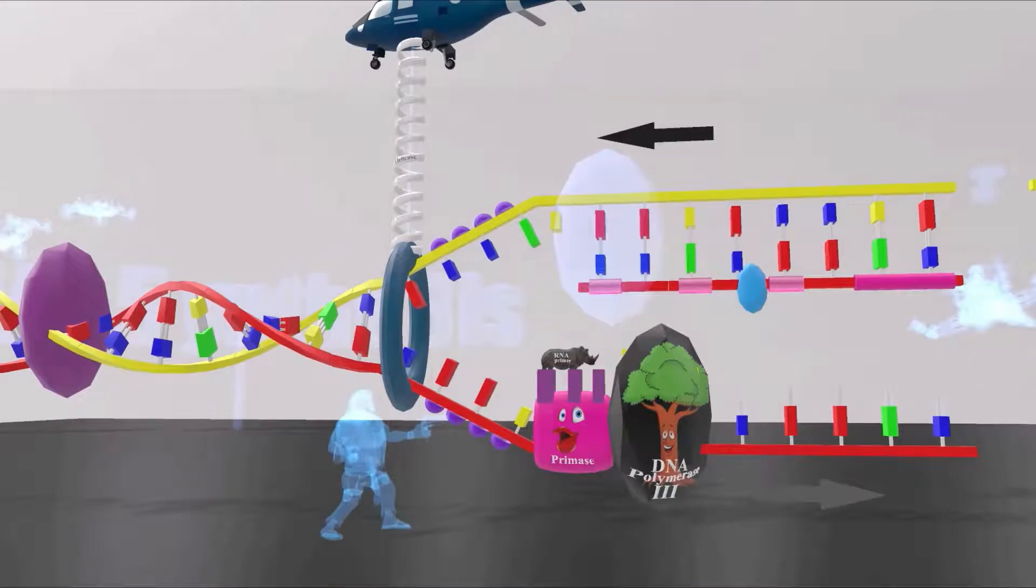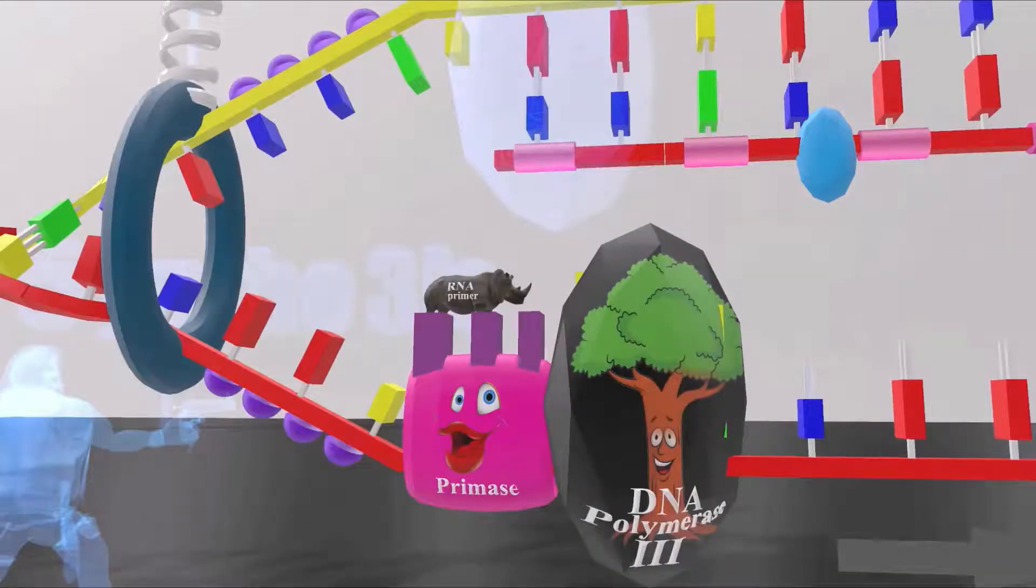Over here we see DNA polymerase's girlfriend. Her name is Primase because she always promises things. She says, I promise never to leave you. So promise for Primase. Why am I saying that she's never going to leave him? Well, we're going to see soon that she actually does leave him.